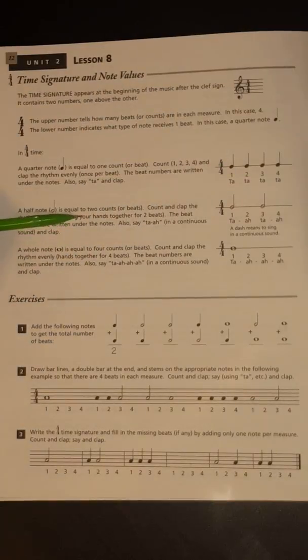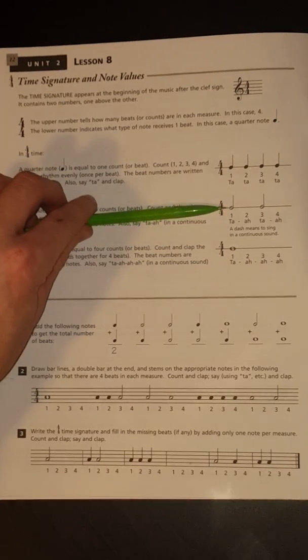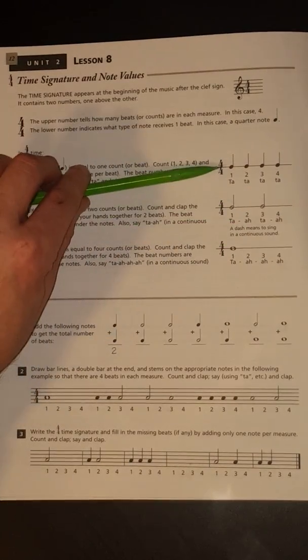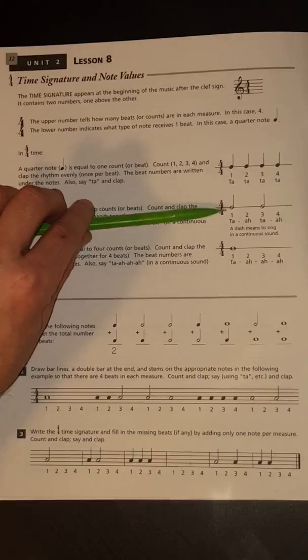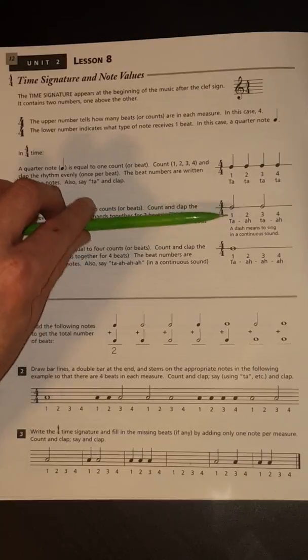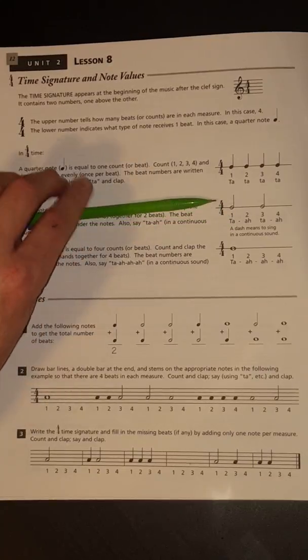Half note is equal to 2 counts or beats. Count and clap the rhythm evenly, holding your hands together for 2 beats. The beat numbers are written under the notes. Also say ta and a continuous sound or clap. Basically what they're saying is the half note has note length. It's a little bit longer. Quarter notes have note length too, but half notes have a very definite note length. It's 2 beats long.